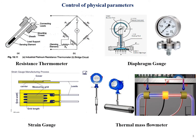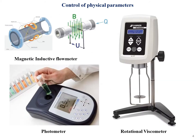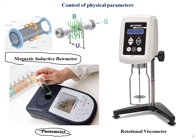Moving on, here are some diagrams for your reference showing how the devices look. We have the resistance thermometer, diaphragm gauges, strain gauges, thermal mass flow meters, magnetic inductive flow meters, the photometer used to measure turbidity, and the viscometer for measuring viscosity.